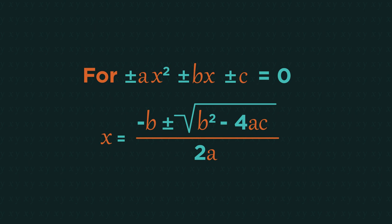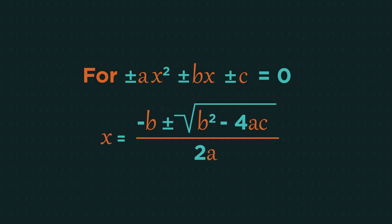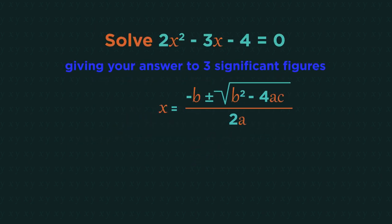And then we just substitute the values into the formula. Let's have a look at an example. a is positive 2, b is negative 3, and c is negative 4. And so we just substitute these numbers into the formula.